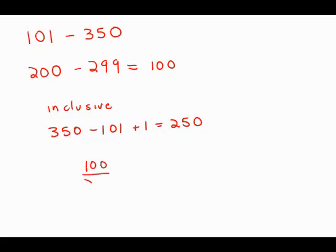So then the probability: 100 tickets divided by 250 tickets, and this divides out nicely to two-fifths. This is answer choice A.